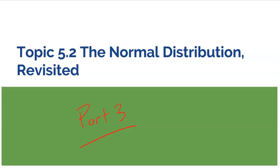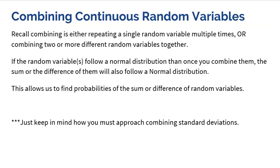So we've learned all about the normal model and how we could find probabilities of intervals, how we could actually find intervals with a given probability, how we can determine if something is significant or not based on the probability. Well, there's yet another important aspect that comes out of it, and that is combining continuous random variables together. Recall combining is either repeating a single random variable multiple times or combining two or more different random variables together.